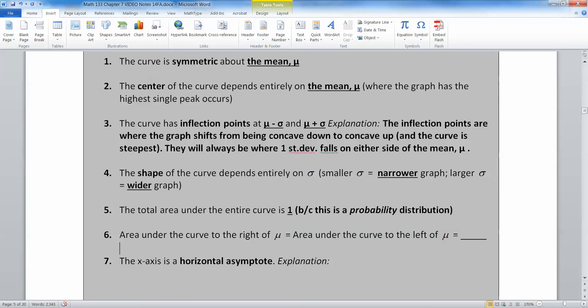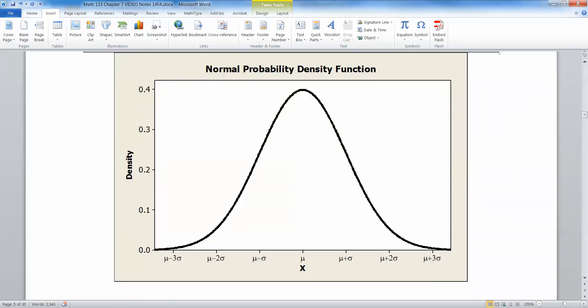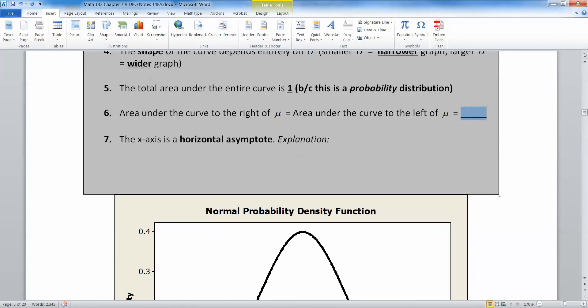All right. Now, the area under the curve to the right and the area under the curve to the left. Oh, okay. So if the whole curve makes 1 and mu is in the middle, then the area on the left and the area on the right both have to be half, 0.5. Right? Because the whole curve makes 1 and it's symmetric.